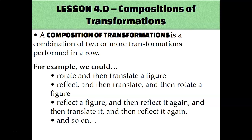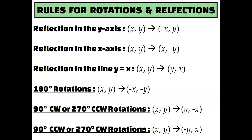The transformations we'll be using today are all the isometric transformations, such as translations — which is adding a value of a to x and adding a value of b to y, moving that up, down, left, or right — or reflecting or rotating. On the screen you see the rules for reflecting in the y- or x-axis, as well as reflecting in the line y equals x.